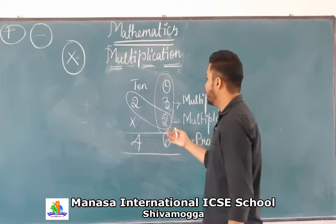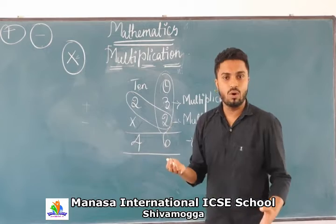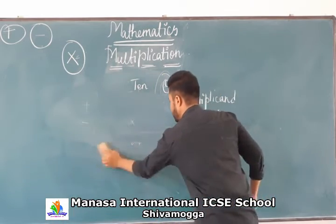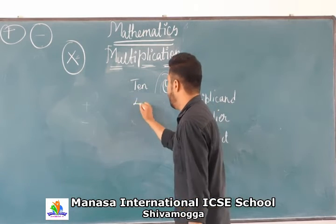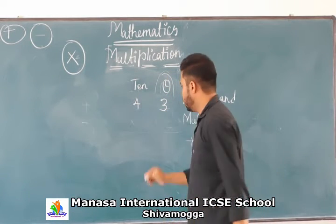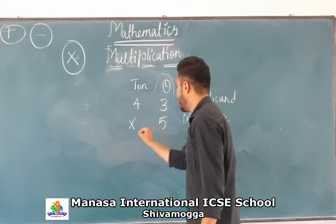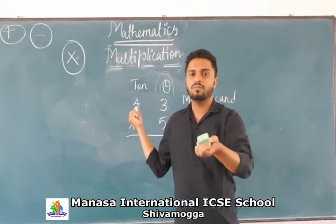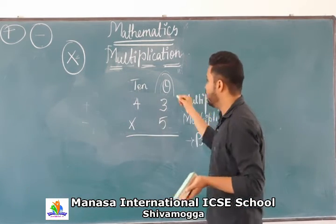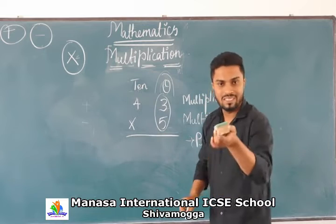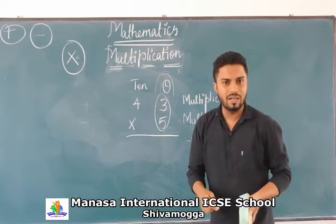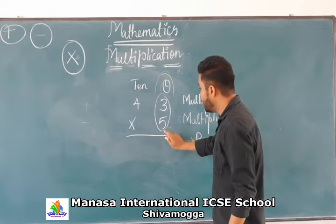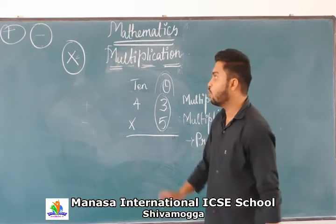I will show you one more example — if you get a carry, how to do it. We will take another example: 43 multiplied by 5. In order to do that, you should know the tables very perfectly. We will start multiplying with the one's place — we multiply this multiplier with this multiplicand. That is, we multiply 5 into 3: 5 threes are 15.